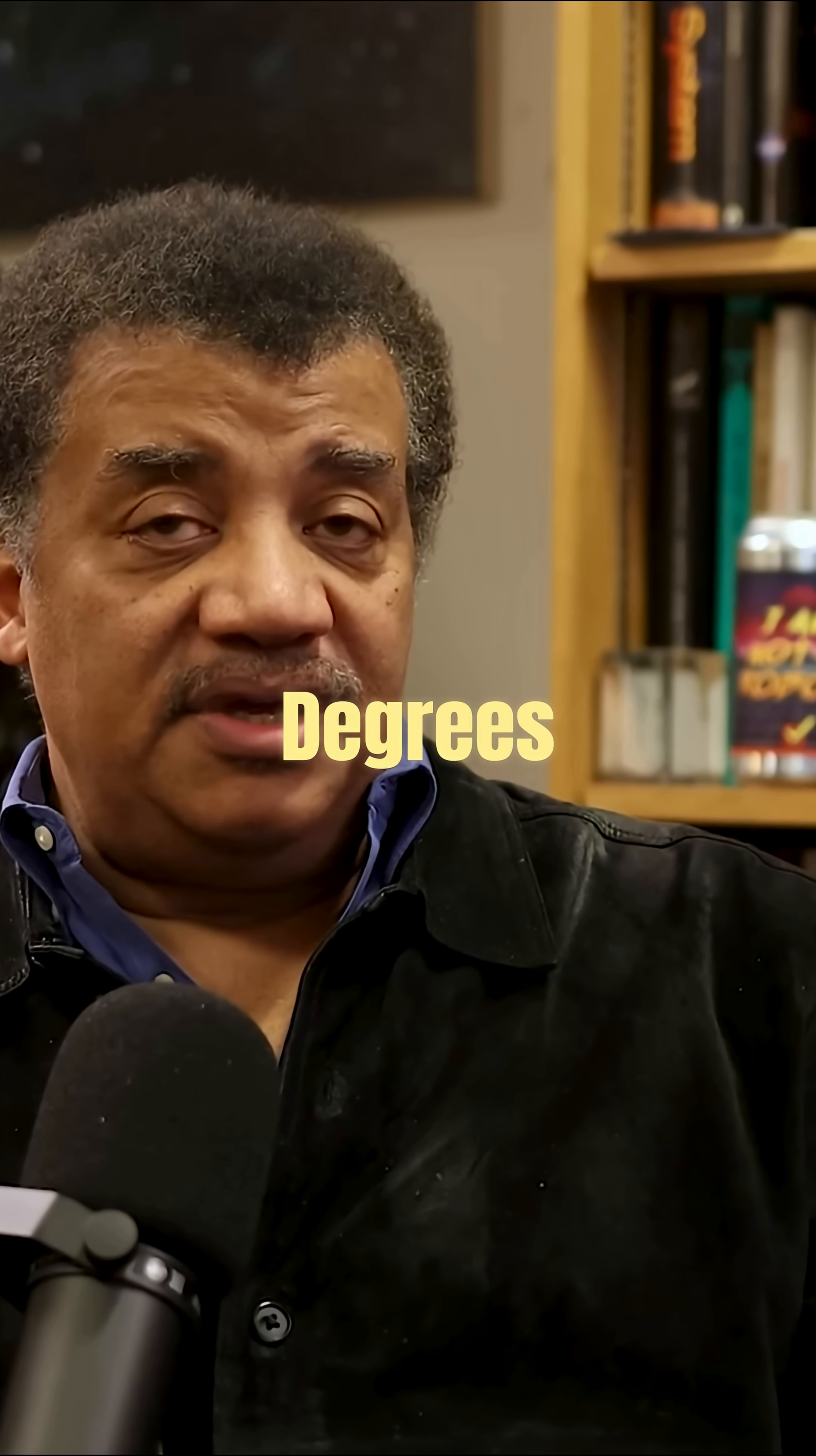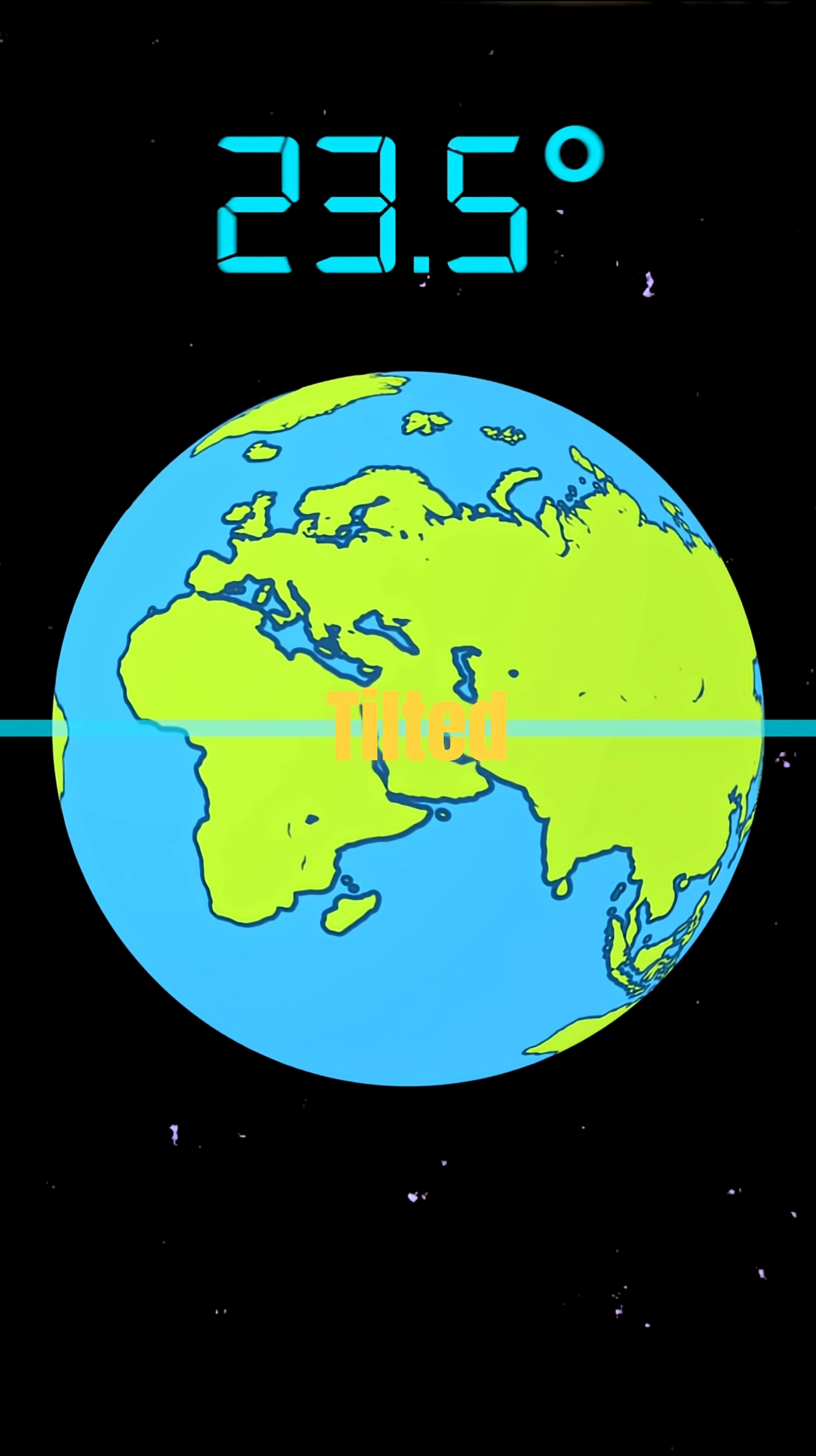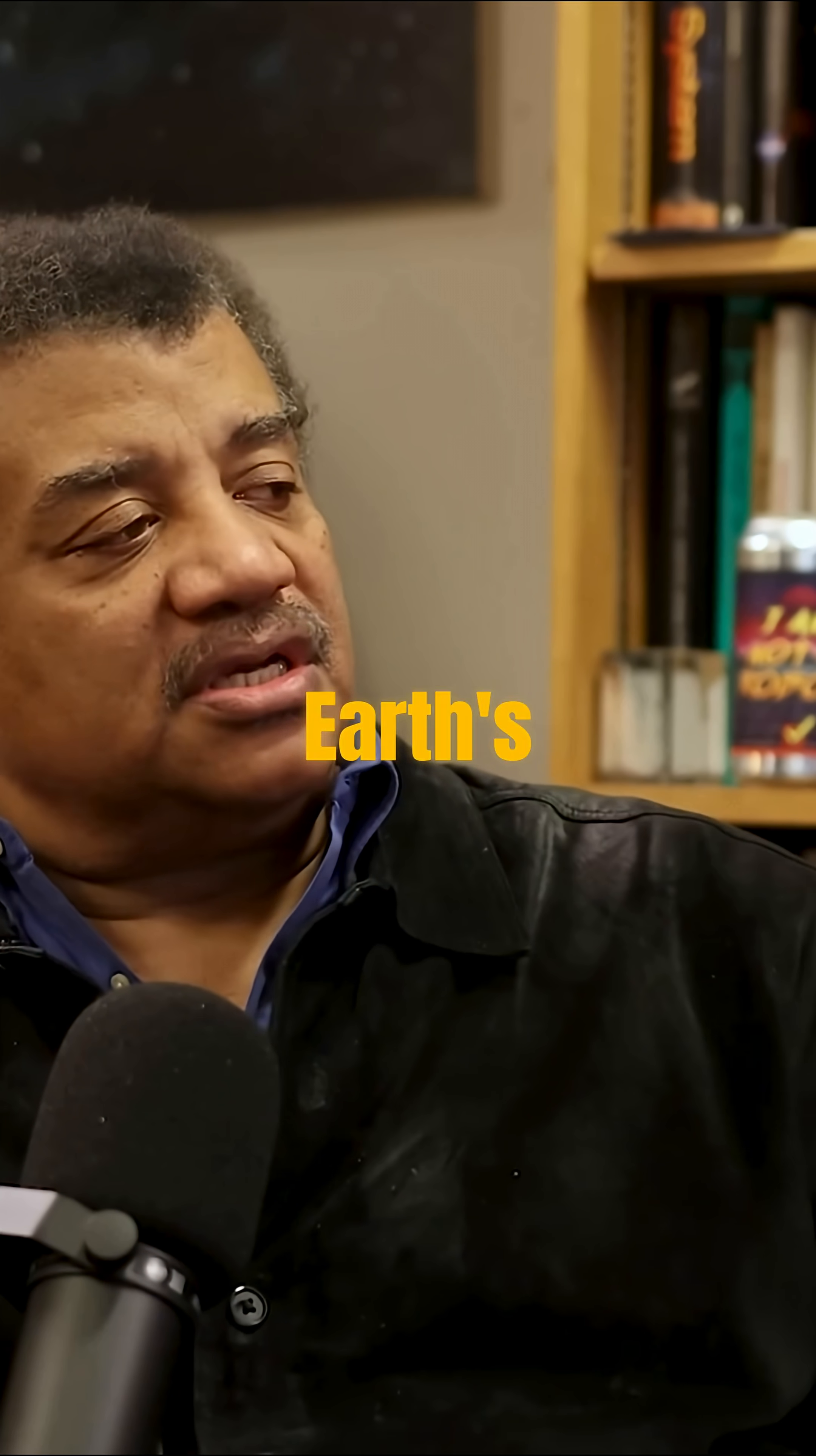Why is it 23 and a half degrees? Because we're tilted that way. That is the tilt of Earth. And because we're tilted, the sun doesn't line up with our equator. If we were not tilted, that path of the sun would be right on Earth's equator.